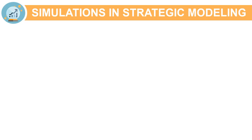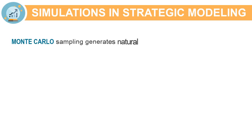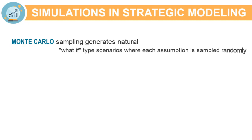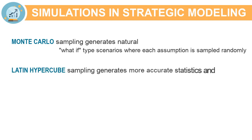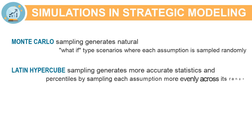In strategic modeling, two types of simulations are supported. Monte Carlo sampling generates natural what-if type scenarios where each assumption is sampled randomly. Latin hypercube sampling generates more accurate statistics and percentiles by sampling each assumption more evenly across its range.